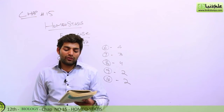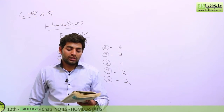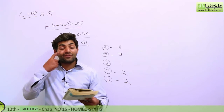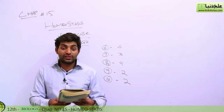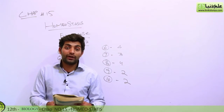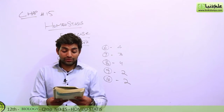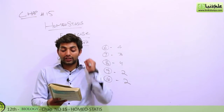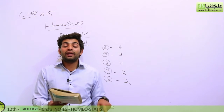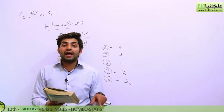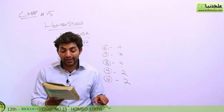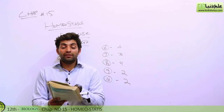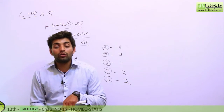Discuss the names of excretory products in association with water availability — this is homework. Account for the excretory system in earthworms as discussed. Highlight the role of the liver as an excretory organ, which is very important.